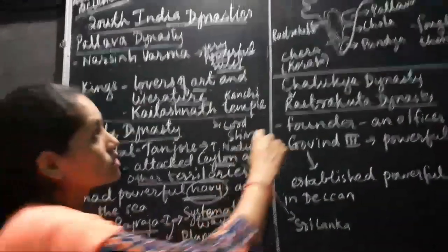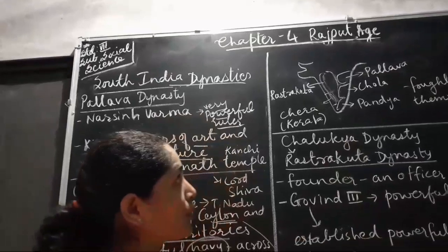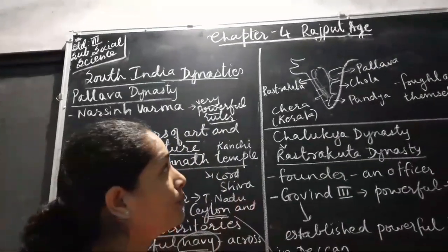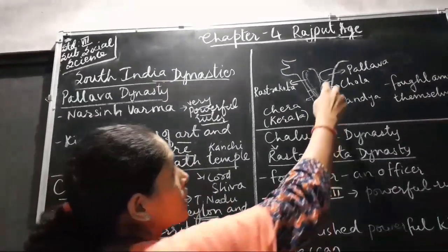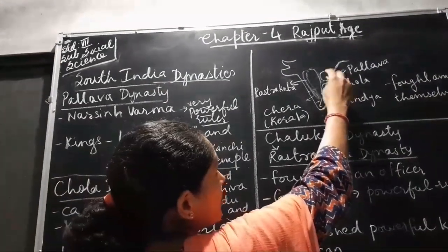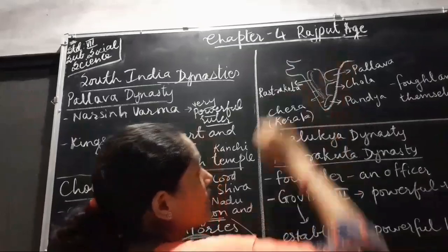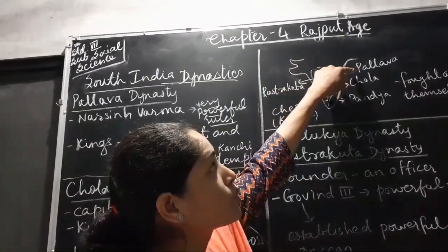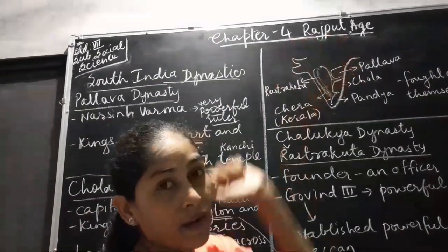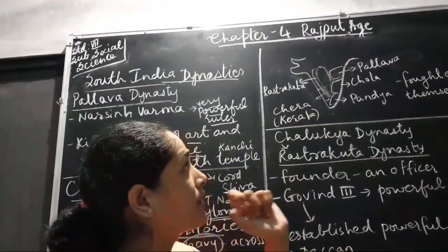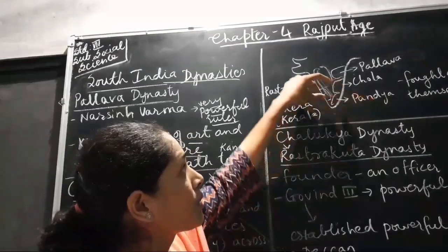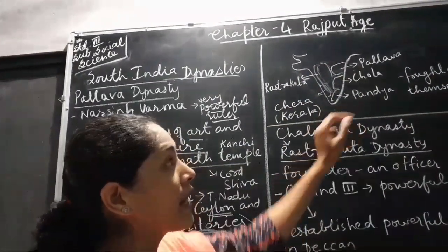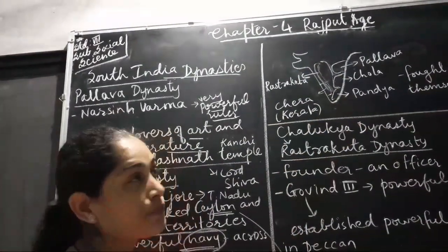Let us see here. This is the map of India which I have roughly drawn. This area — this is South India we are talking about. This portion, this region was ruled by Pallavas — Pallava dynasty. Below that we had Chola and at the end we had Pandyas.